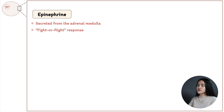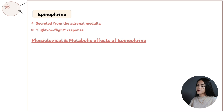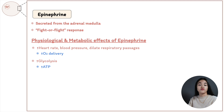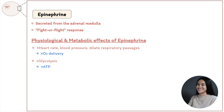Epinephrine increases heart rate and blood pressure, and dilates respiratory passages to increase oxygen intake and delivery to muscles. In muscle, it increases glycolysis activity by increasing the synthesis of fructose-2,6-bisphosphate, which is an allosteric activator of phosphofructokinase 1 (PFK1), producing more ATP to support muscle activity.